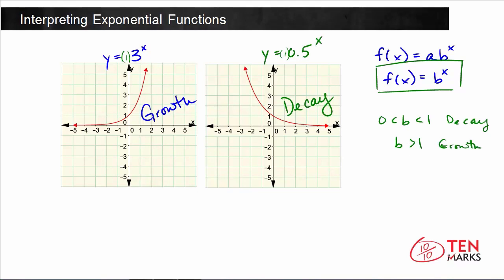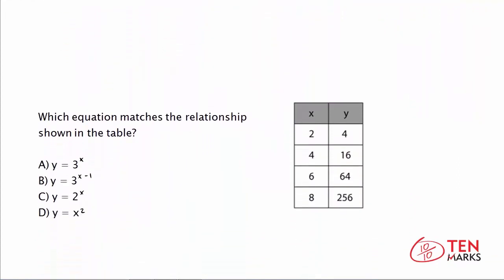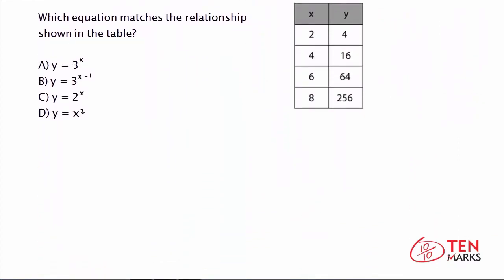So let's solve a problem together now. Which equation matches the relationship shown in the table? So what you have here is a table of values and you want to be able to identify the correct equation. To find the correct equation, choose an x value from the first column and substitute it into each equation to see if you get the corresponding y value. We have four different options and a is y equals 3 to the power of x. So let's start there. We're going to take this x value of 2 and see if we can use one of these functions to generate the y value of 4. So we're working with the ordered pair 2, 4.